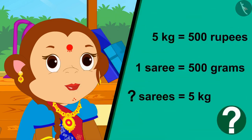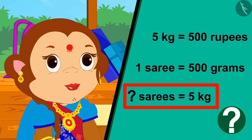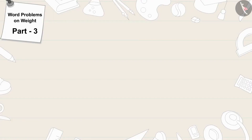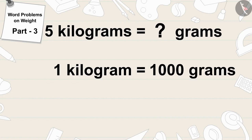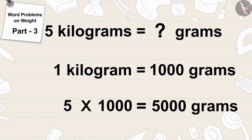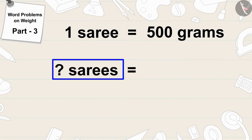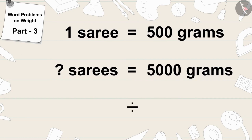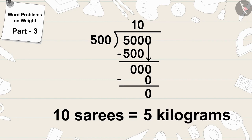First, we write 5 kg in grams: 5 times 1000 equals 5000 grams. Banno's saree is 500 grams, so to find how many sarees fit in 5000 grams, we divide 5000 by 500, giving 10. Banno will be able to send 10 sarees in a 5 kg parcel.